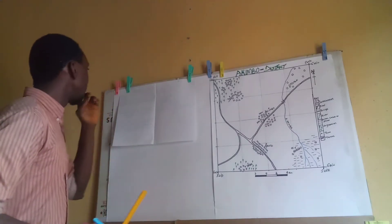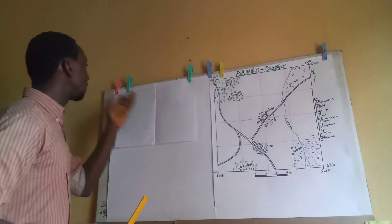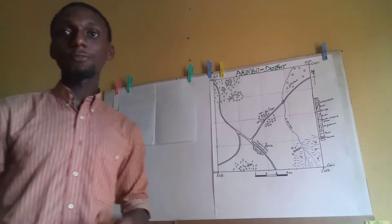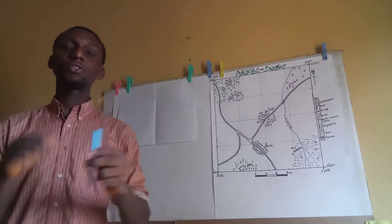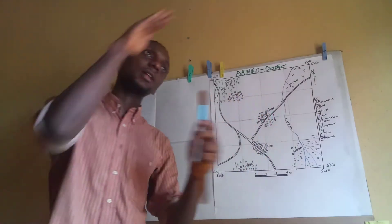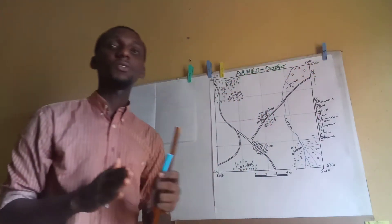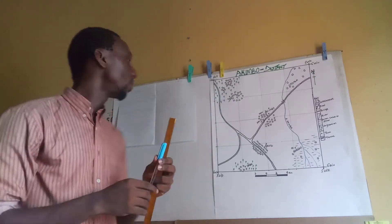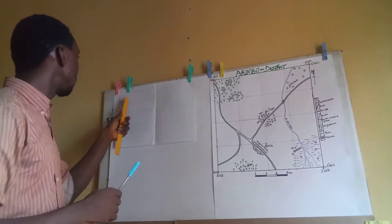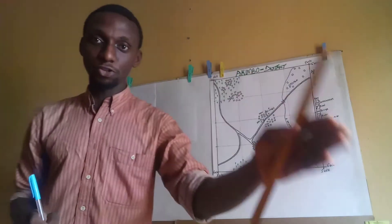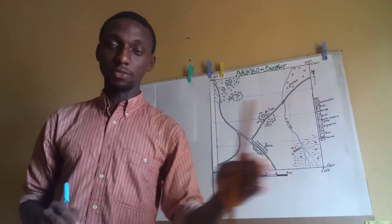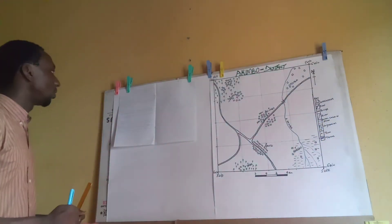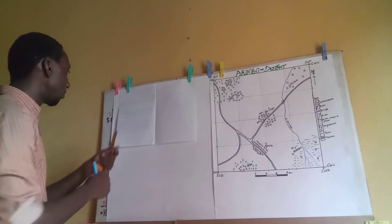Question number one says: calculate the distance from Dengue to Kasala as a crow flies. When we talk about a crow, a crow normally flies along a straight line. So that means the question is asking you to calculate the distance from Dengue to Kasala along a straight line. Is that okay?